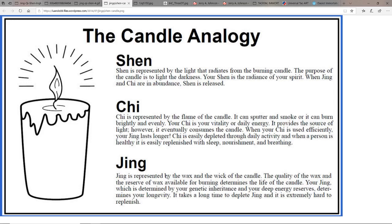Your jing, which is determined by your genetic inheritance and your deep energy reserves, also what you're taking in food-wise, determines your longevity. It takes a long time to deplete jing and is extremely hard to replenish, so conserving it is important. In that sense, the ancient Taoists would tend to as a male not ejaculate or ejaculate as little as possible.